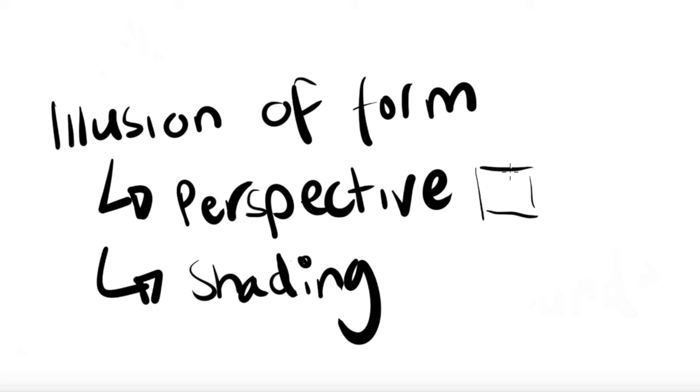There are a few ways that artists can give the illusion of form on a two-dimensional picture plane. One method is by perspective, like making a square look like a cube. And the second way is shading, like adding that range of value on a circle to make it become a sphere. So we can use lines and value to give the illusion of form.